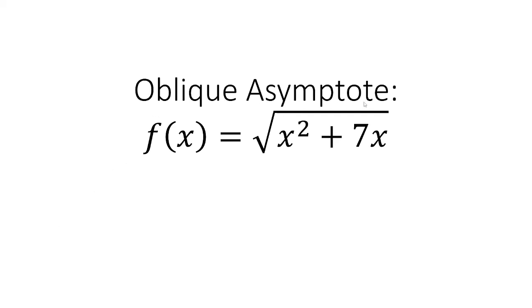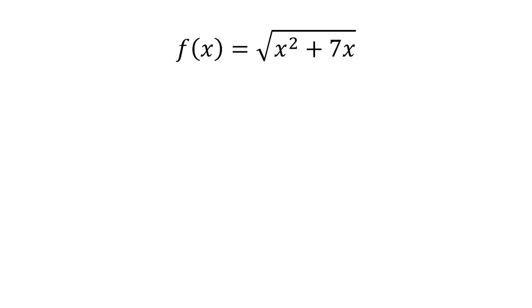In this video, you want to find the oblique asymptote of the function square root of x squared plus 7x. So, we know that f has an oblique asymptote in the form of y equals ax plus b, so our goal is to solve for a and b.